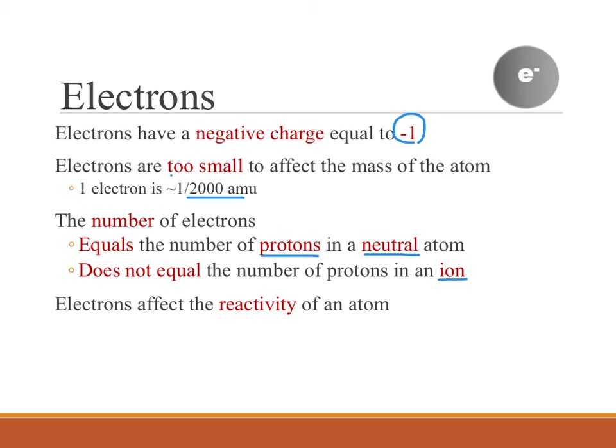Electrons are important because they affect the reactivity of the atom - what it reacts to, how it reacts. That's electrons' role. Protons are involved in identity, neutrons help keep the protons in the nucleus, and electrons determine how an atom reacts.